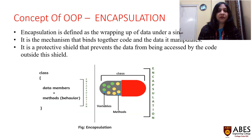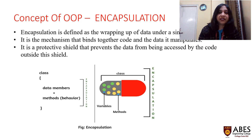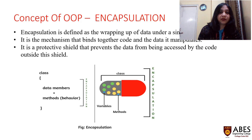The next feature of object-oriented programming is encapsulation. This word arises from the capsule — as a capsule consists of different salts, encapsulation is defined as wrapping up of data under a single name. It is a mechanism that binds together code and data. It is a protective shield that prevents the data from being accessed by code outside the shield. In procedure-oriented approach, data was not secure, but in object-oriented approach, data is secure with the help of encapsulation.